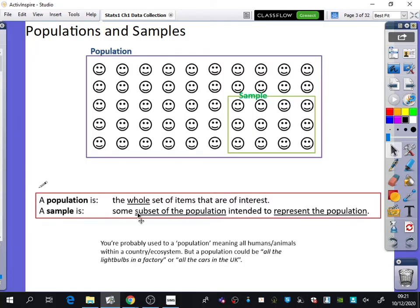A sample is some subset of the population intended to represent the population. You take a smaller group because taking the whole group is often much more work. That's what we mean by population and sample. Underlined things are the key parts of the definitions you need to know.